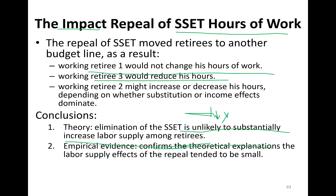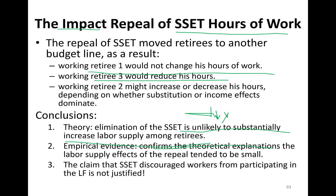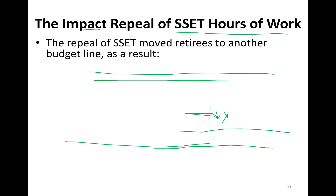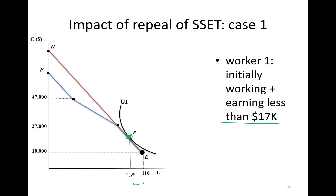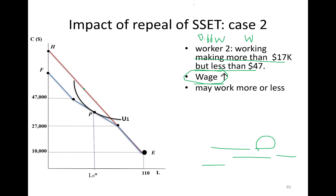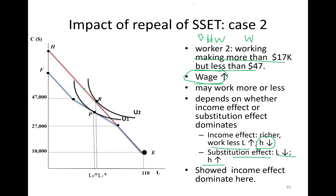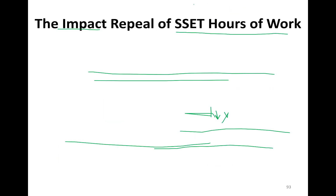Claiming that the Social Security earnings test discouraged workers from participating in the labor force is not justified. We shouldn't take away retirees' income because they kept working beyond their retirement years. So to summarize: retiree one — no change; retiree two — depending on income and substitution effects, may work more or less; retiree three — expected to work less.